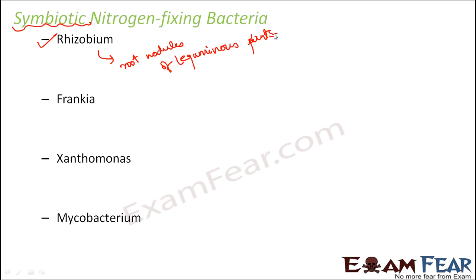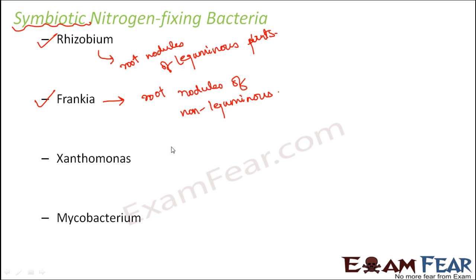Almost 10 to 12 species of Rhizobium exist, and all of them are known for nitrogen fixation. The next nitrogen fixing bacteria is Frankia, which is associated with the root nodules of non-leguminous plants. Frankia is also known as mycelial bacteria because it belongs to the category of actinomycetes. So Rhizobium and Frankia are the popular symbiotic nitrogen fixing bacteria present in the root nodules of plants.